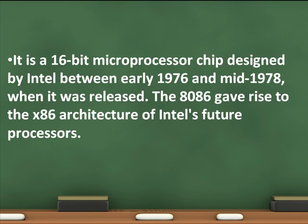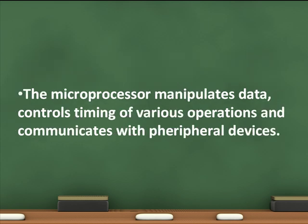The 8086 is a 16-bit microprocessor chip designed by Intel between early 1976 and 1978, when it was released. The 8086 gave rise to the x86 architecture of Intel's future processors. The microprocessor manipulates data, controls timing of various operations, and communicates with peripheral devices.